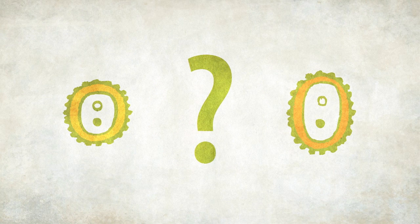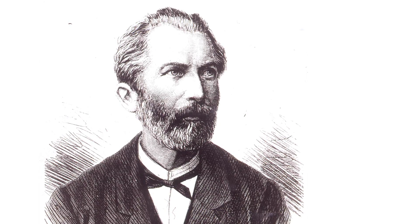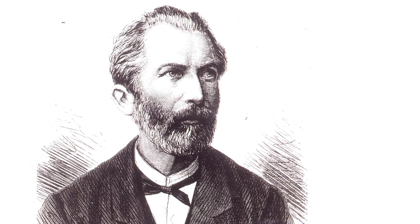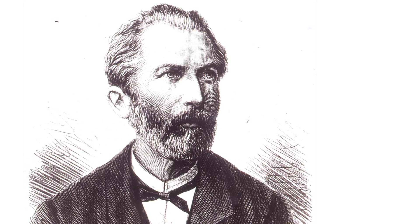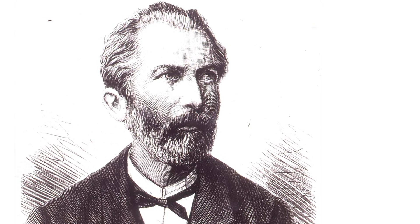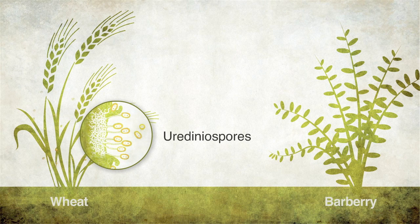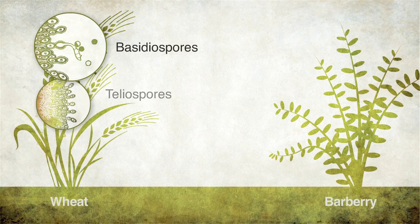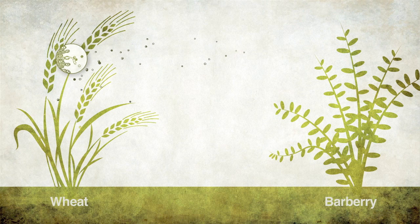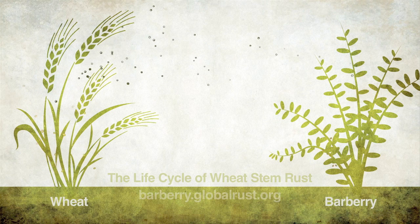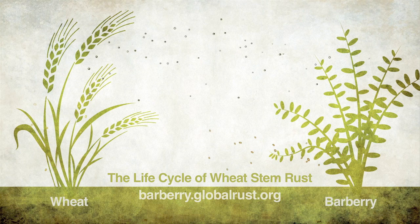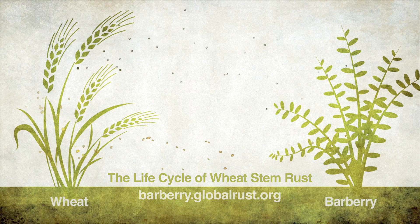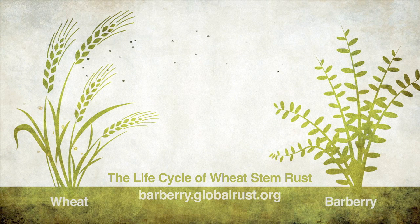Where does that variation come from? In a series of experiments in the mid-1860s, Heinrich Anton de Bary, one of the founding fathers of modern plant pathology, demonstrated that the stem rust pathogen, Puccinia graminis, completes only part of its life cycle on cereal hosts like wheat. As shown in detail in the short film The Life Cycle of Wheat Stem Rust, the pathogen completes other parts of its life cycle only on alternate hosts, which include certain species of plants from the genus Berberis, commonly called barberries.